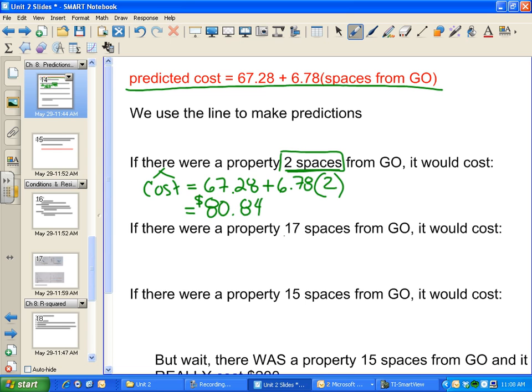Here's another one. What if I had a property 17 spaces from GO? To predict the cost, I simply use my equation and insert 17 where I would put the number of spaces from GO. I got $182.54. Notice I keep using the dollar sign because cost is in dollars—Monopoly dollars, but still dollars.